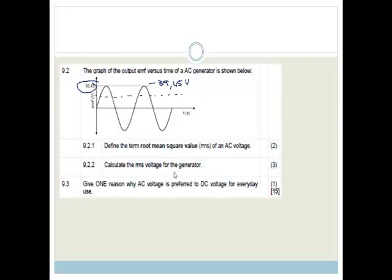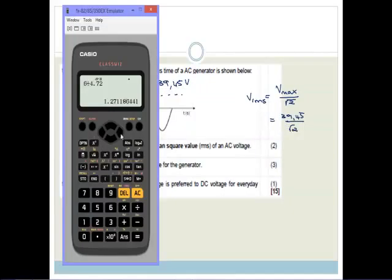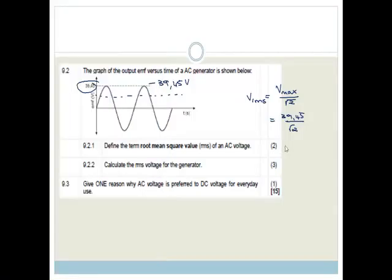Now it says calculate the root mean square voltage of the generator. Well, if you go and look on your equations sheet, you will see that there's an equation that says V root mean square is equal to V max over root 2. And you can see that we've got the value of 39.45. So we're going to go 39.45 divided by root 2. So we're going to pop that in our calculator. And we're going to see it's 39.45 divided by square root 2 equals 27.895. So we round it up and it becomes 28 volts. So that is the root mean square.